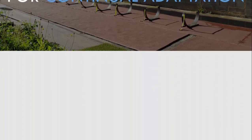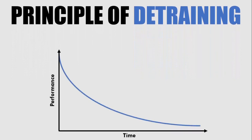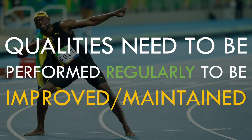The last concept we need to understand is detraining. It basically states that if we don't perform an exercise or physical quality for an extended period of time, our performance will reduce. For example, if Usain Bolt didn't run at all for three months he would not be at his world record breaking capabilities in the 100 meter sprint. Simply put, if you don't use it you will lose it.